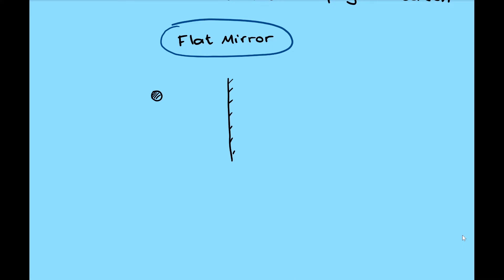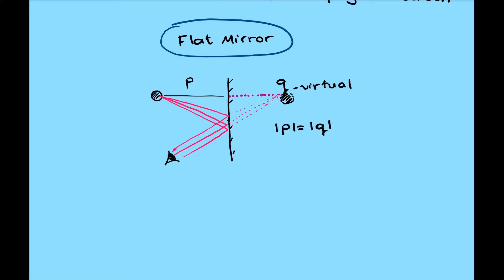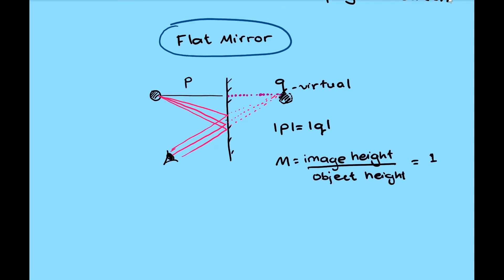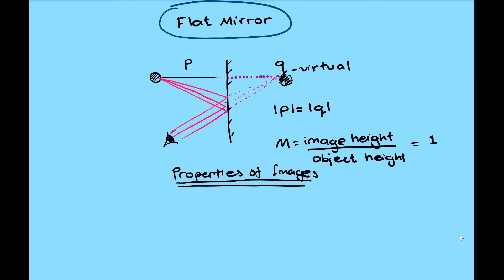Let's have a look at the formation of an image from a flat mirror. The distance of the object is P. The observer can see the object due to the reflection of rays of light on the flat mirror, and these rays apparently appear to diverge from a point behind the mirror at distance Q, the image distance. Therefore, this is considered a virtual image, and the values of P and Q are equal. The magnification M is found to be 1, meaning the object and image are the same size. Overall, properties of the image formed by a flat mirror are: object distance and image distance are equal, the image is virtual, upright, and front-back reversal.